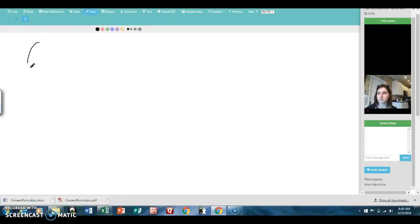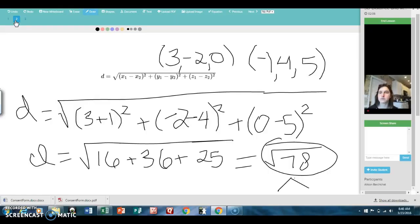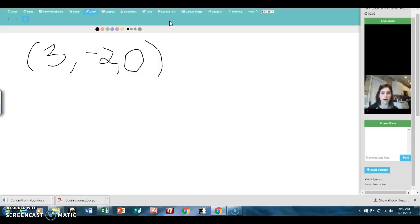It was 3, negative 2, 0. And then we need the second one, because we're looking for a midpoint between the two points. So let's go back and look. 3, negative 2, 0. And then it was negative 1, 4, 5.